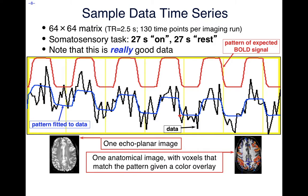That's why we need a lot of data. When the signal change due to noise is the same size as the signal change due to our effect, we need a lot of data to be reliable. Here's what one echo planar image from this data set looks like on the left, and here's what one anatomical image looks like on the right.